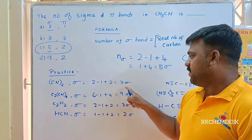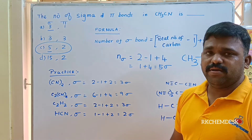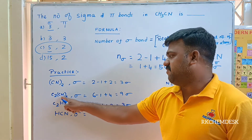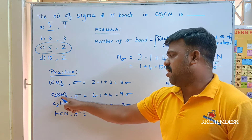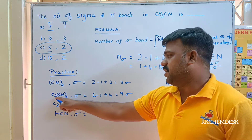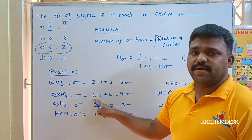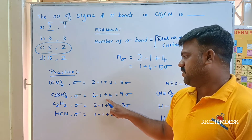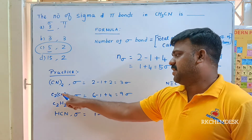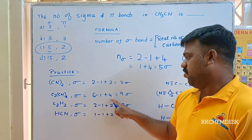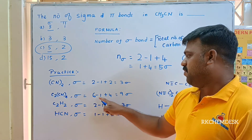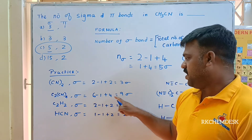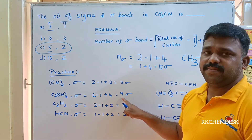For C₂(CN)₄: total carbon is six — two plus four — so six minus one equals five, plus other atoms N₄ equals four. Five plus four gives nine sigma bonds.